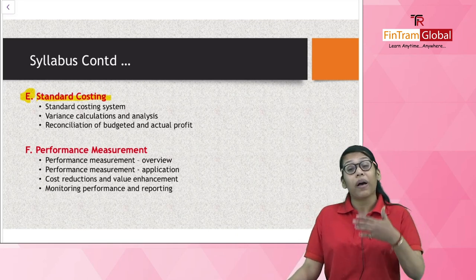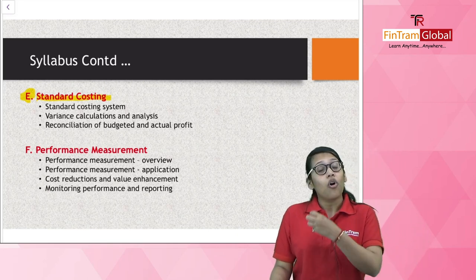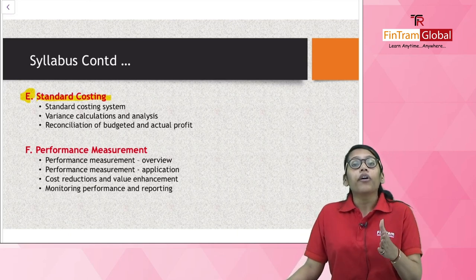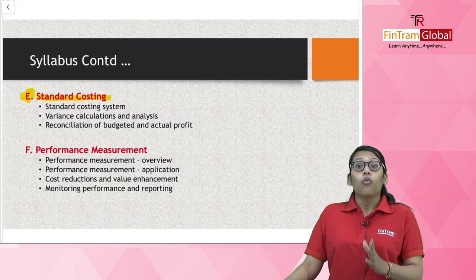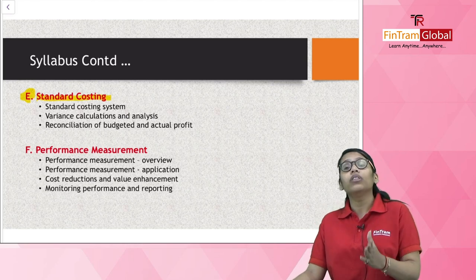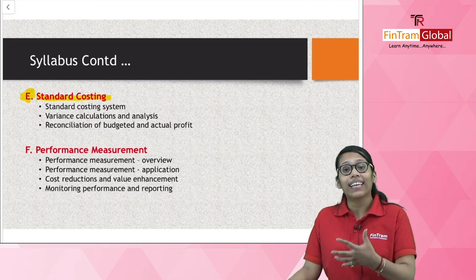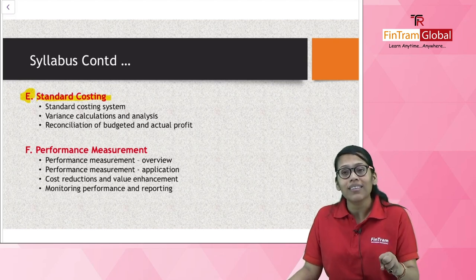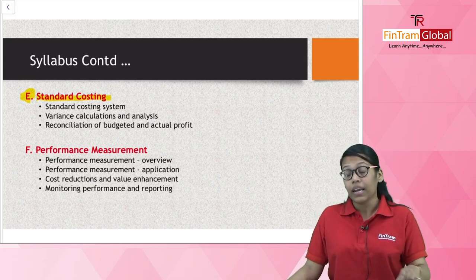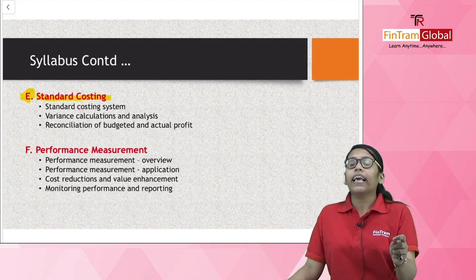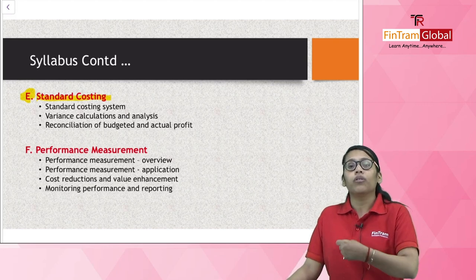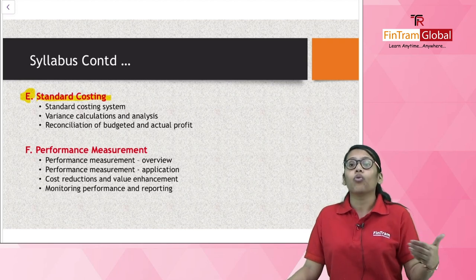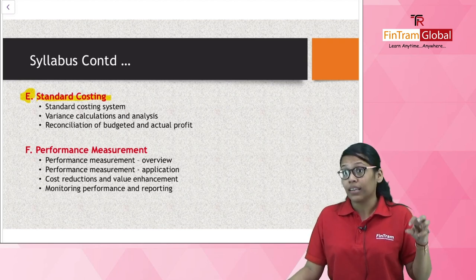The next section is Section E — Standard Costing, which is also very interesting. All the topics in management accounting are interesting! Here we will first understand what standard costing is, what variance is, and how variances are used to analyze performance. Just like capital budgeting, this topic will also reappear in your Performance Management and FM papers, so it is definitely an important topic.